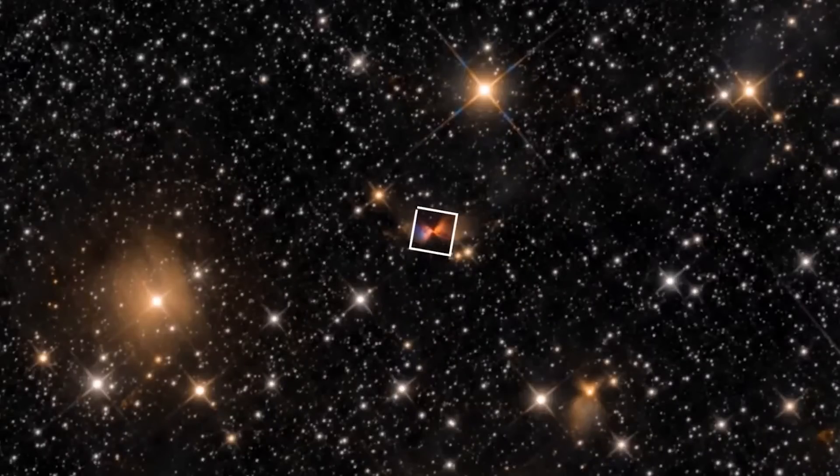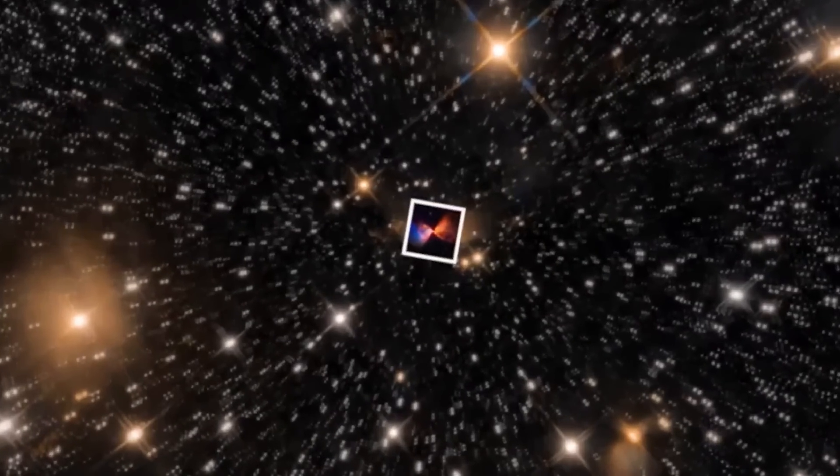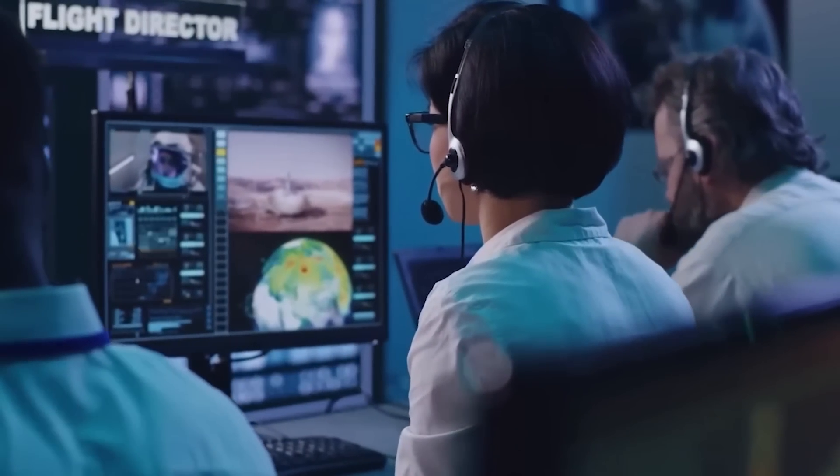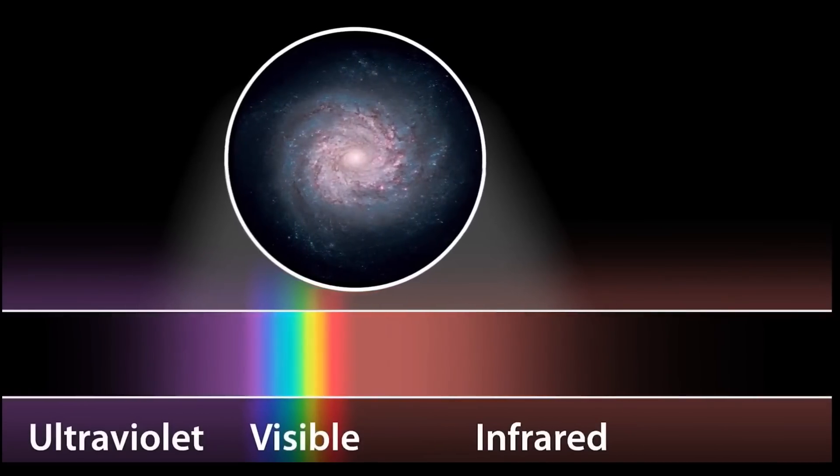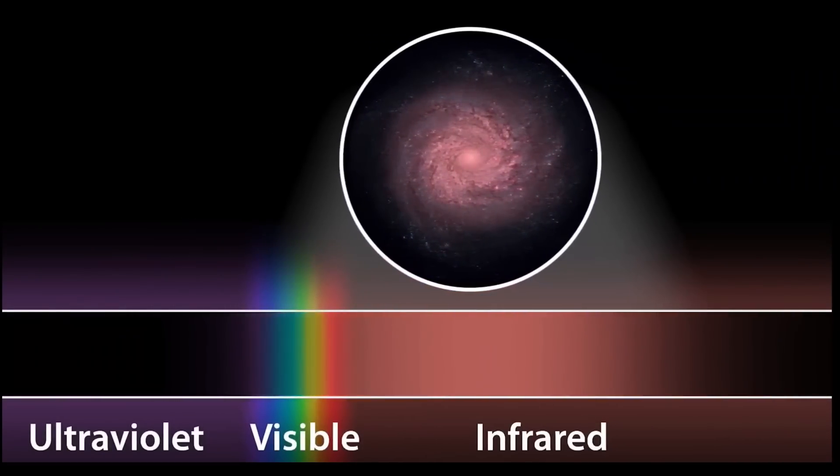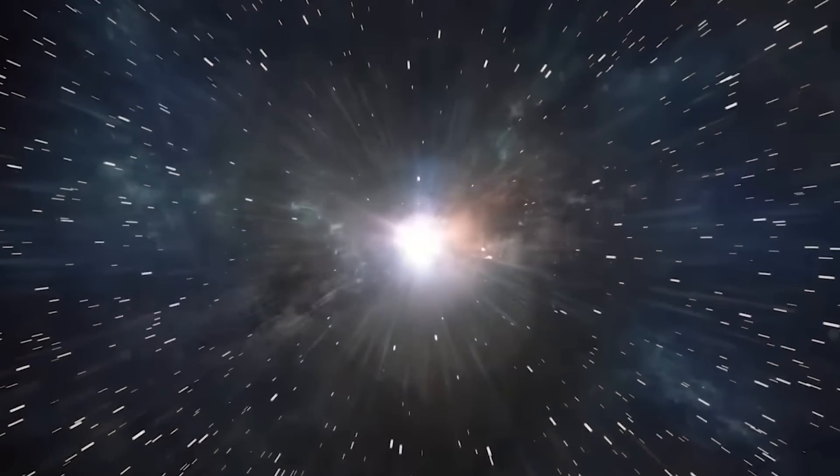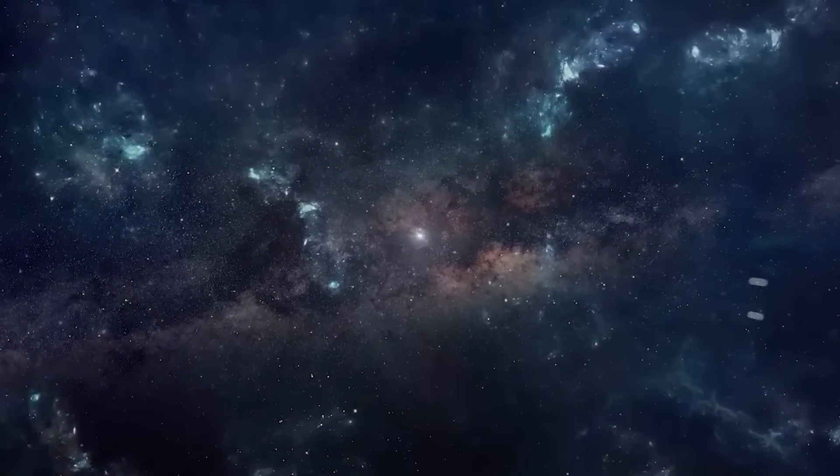JADES takes advantage of the sensitivity and resolution of James Webb in the infrared, making it possible to detect light from very distant objects that have been redshifted due to the expansion of the universe. This approach has revealed galaxies with very high redshifts, demonstrating the power of James Webb to study the universe in its earliest stages.